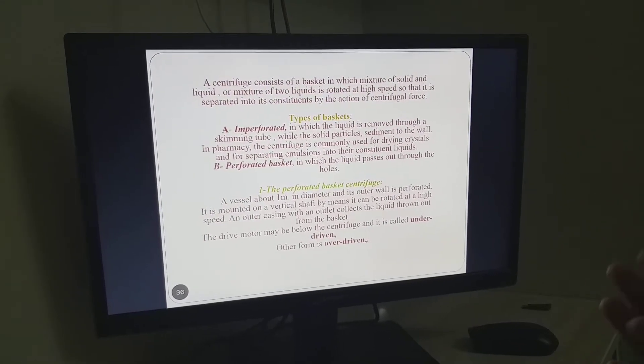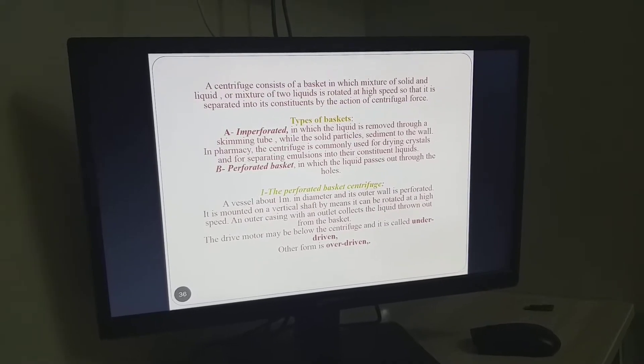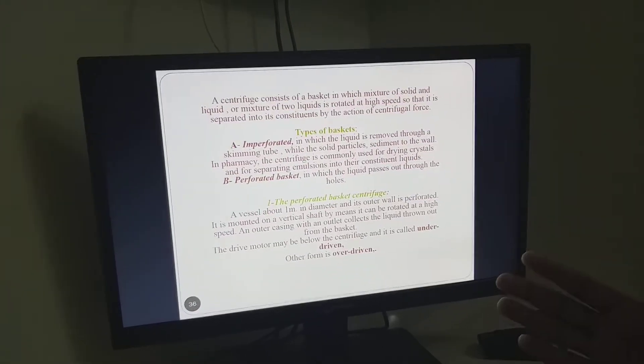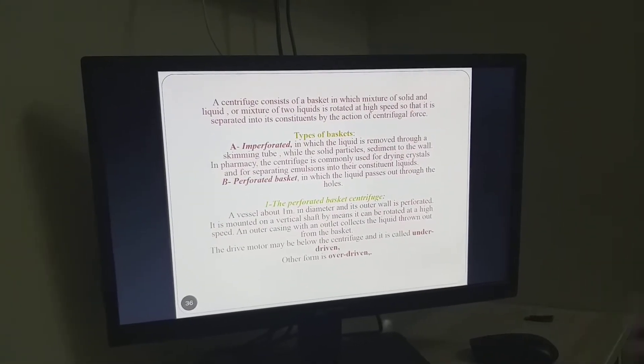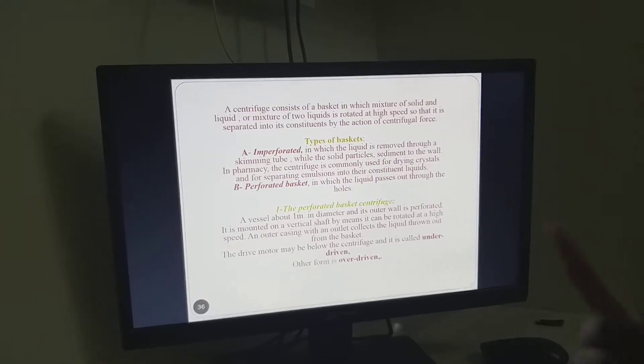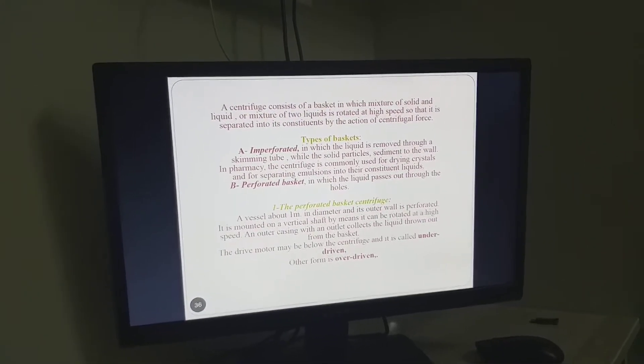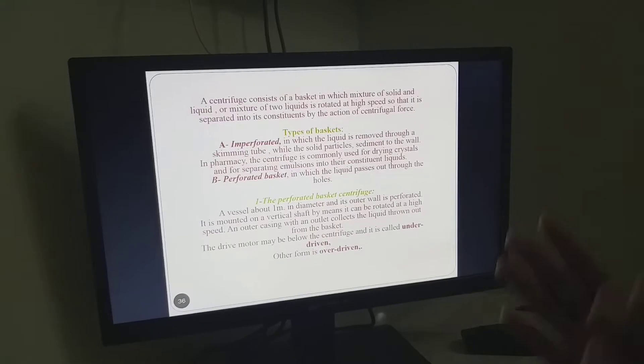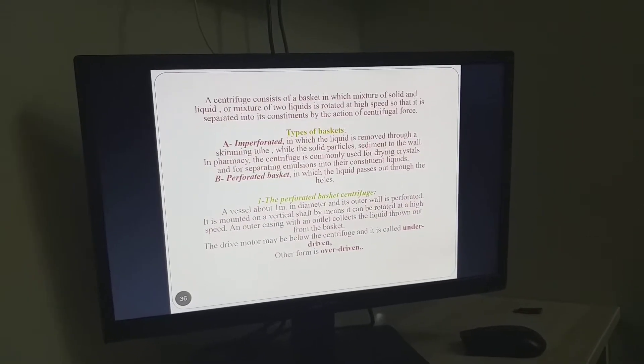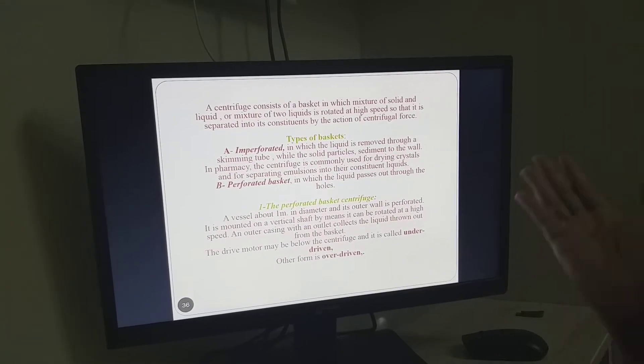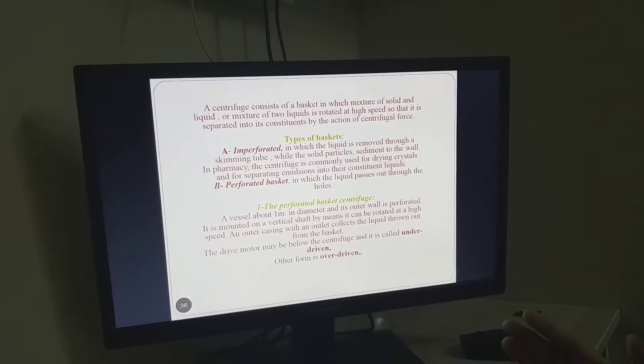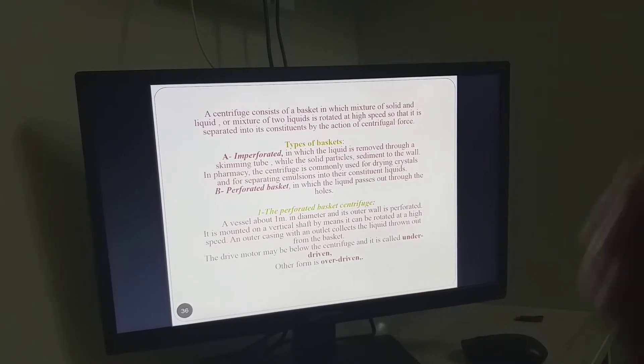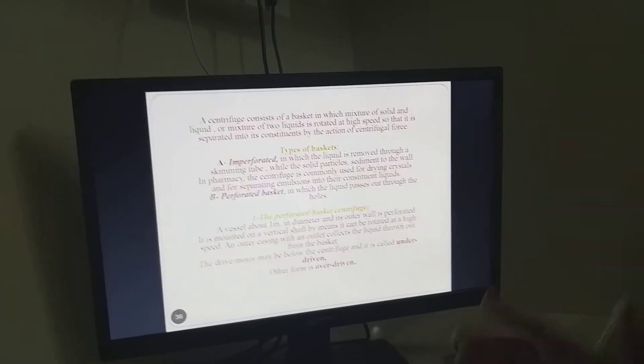In perforated basket centrifugal, the liquid passes out through holes provided around the circumference of the basket. The centrifugal force causes the fluid inside the basket to rotate, and the liquid is thrown away from the center. It can escape either from the tubes or from the holes provided on the circumferential wall.